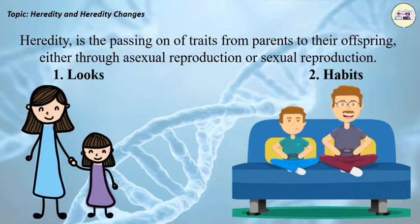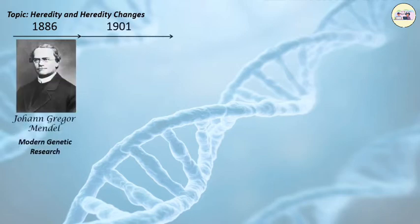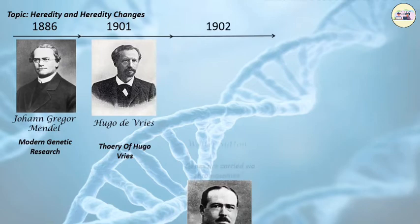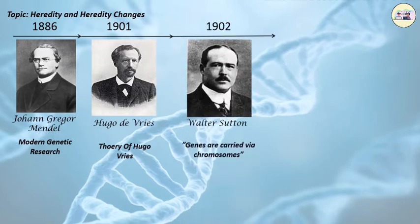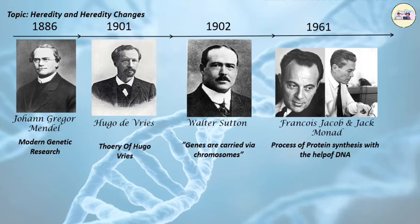Heredity and Hereditary Changes: Study on Heredity. In 1886, Gregor Mendel started modern genetic research. In 1901, came the theory of Hugo de Vries. In 1902, Walter Sutton started finding the nature of genetic material. It was proved that genes are carried via chromosomes.